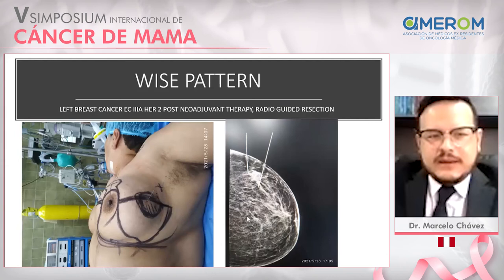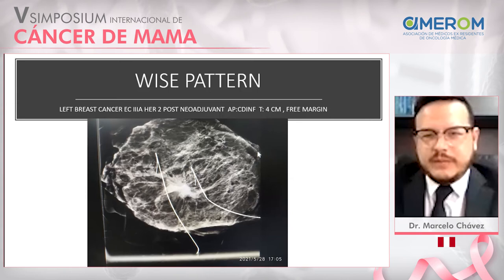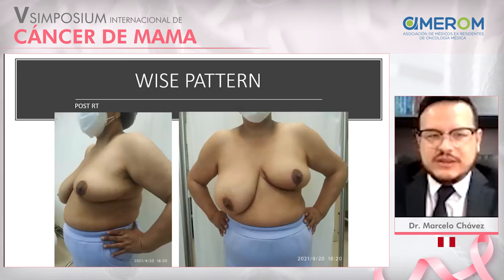This patient had 3A, HER2-positive breast cancer with adjuvant therapy but still had a large mass. We performed radioguide resection using a wise pattern to achieve free margins. We obtained 4 centimeters of invasive carcinoma with free margins. This is the post-radiotherapy result — she has no asymmetries and is now requesting symmetrization of the contralateral breast.